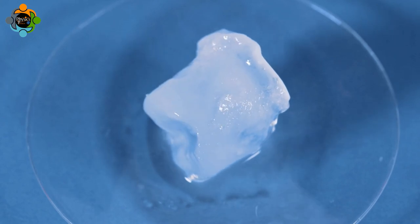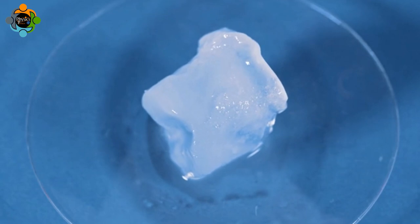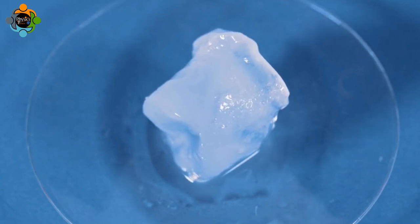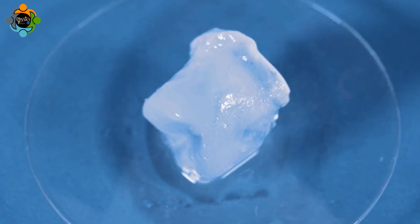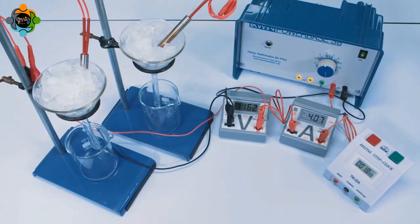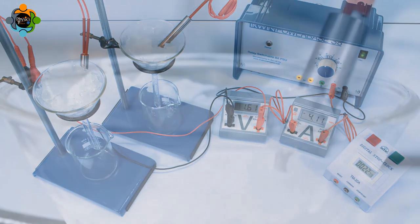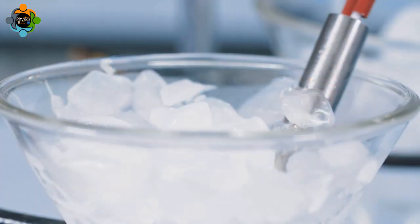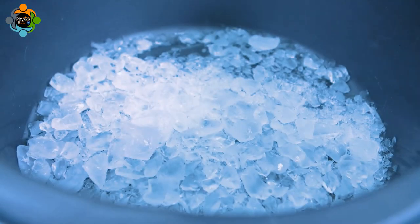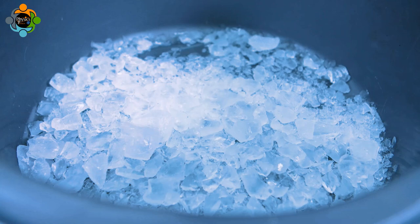The amount of thermal energy required to convert one kilogram of a substance from the solid phase to the liquid phase whilst maintaining a constant temperature is known as the specific latent heat of fusion. In this experiment, an immersion heater will be used to determine the specific latent heat of fusion of ice. For this experiment, we will heat ice and collect the melted water in a beaker.